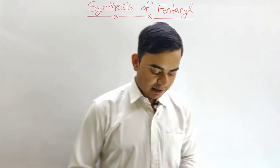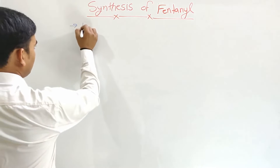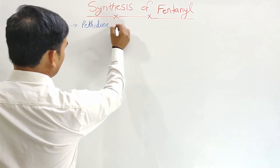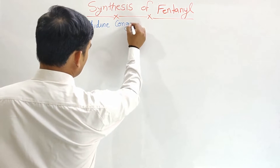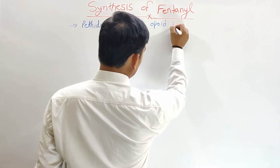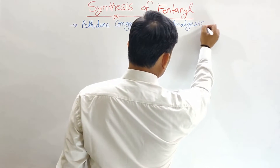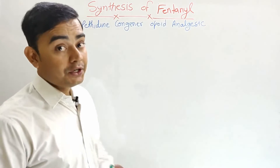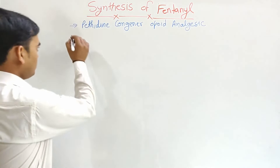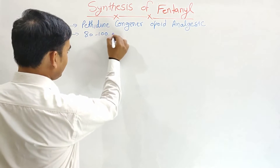Fentanyl is an opioid analgesic and it is a piperidyl congener derivative — a piperidyl opioid analgesic. Piperidyl is 80 to 100 times more potent than morphine, so fentanyl is significantly more potent.